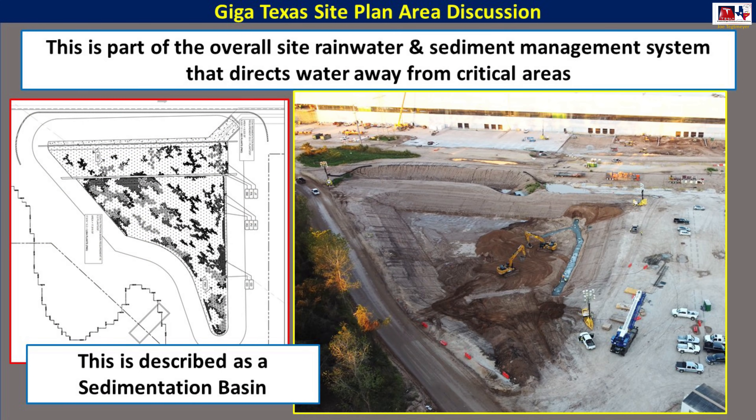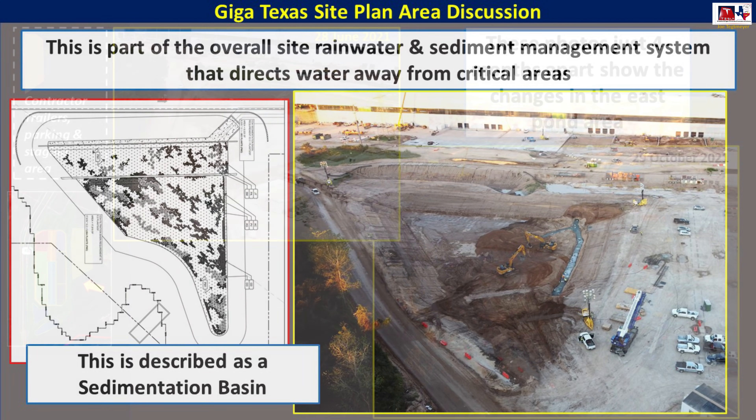This area is on the east side of the body-in-white structure. It's a little pond area near where the robotic assembly machines were temporarily stored and is now a parking lot. This is part of the overall rainwater and sediment management system to direct water away from critical areas around the factory, and it's called a sedimentary basin.